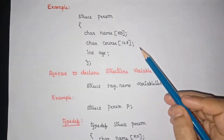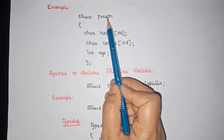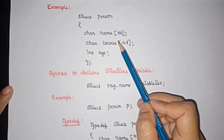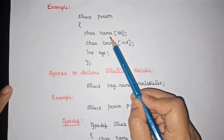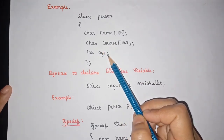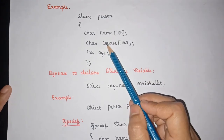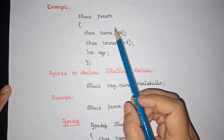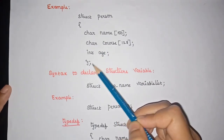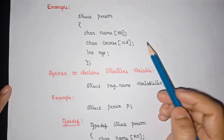Here is an example of a structure. We use the keyword 'struct' and for the tag name we use 'person'. Inside this structure we have variables with different data types: 'name' which is of character type, 'course' which is also of character type, and 'age' which is of integer type. The structure ends with a closed curly brace followed by a semicolon. This is how we define a structure.